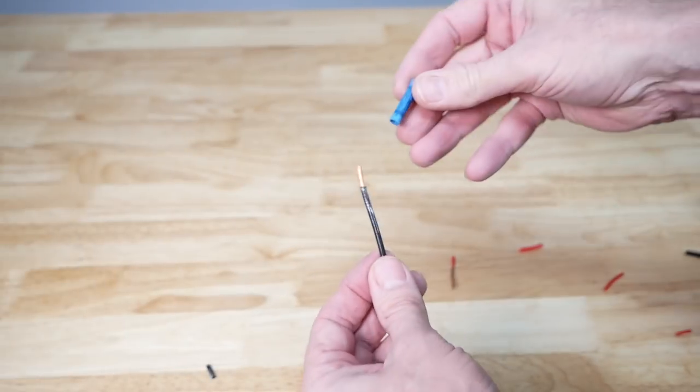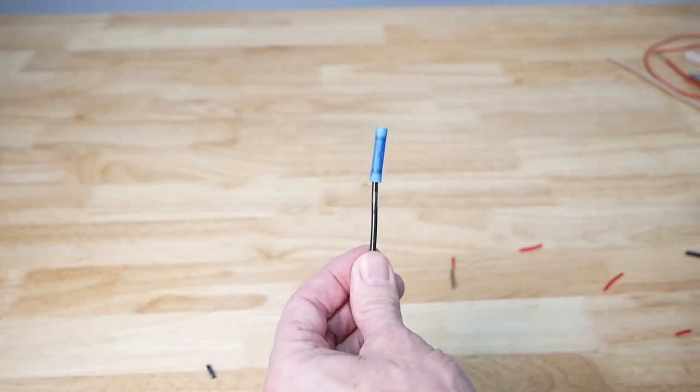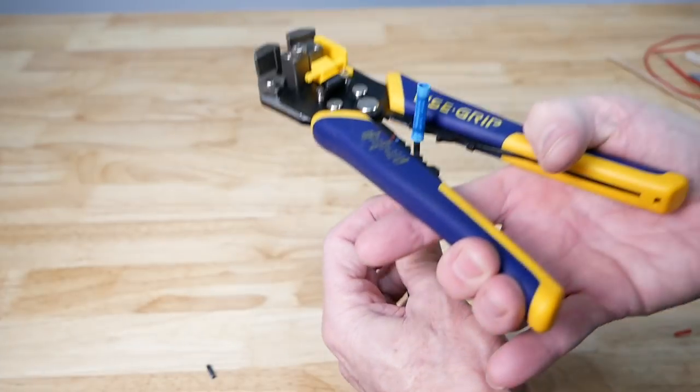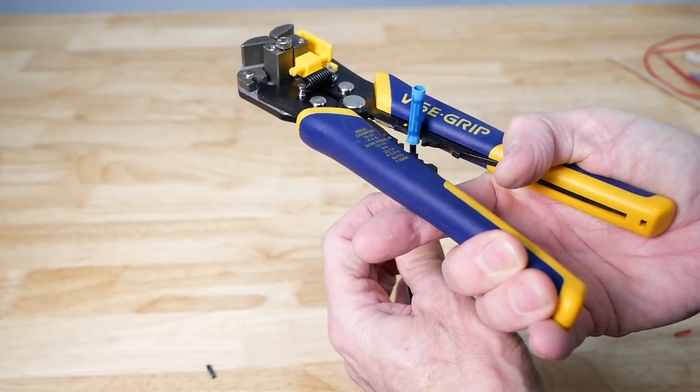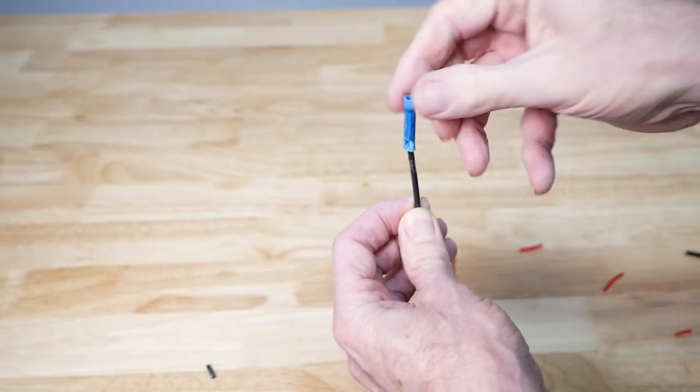Now if we want to install a butt connector on there instead of the other connector, simply slip it on, slip it onto here, put it in the correct color, and it's crimped. Ready to go.